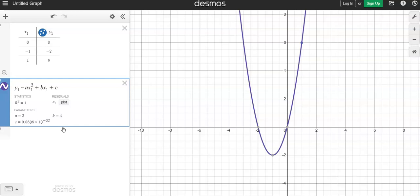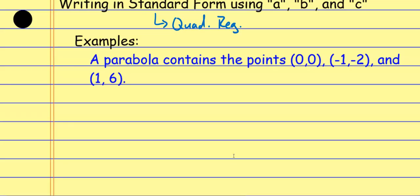Looking at the A, B, and C values: A is 2, B is 4, and the C value shows 9.86 times 10 to the negative 32nd power — that's scientific notation. If I write that in standard form, I'd have 31 zeros followed by a 9.8. So I'm really close to zero — if I rounded, the C value would actually be zero, which is what the exact C value is supposed to be.